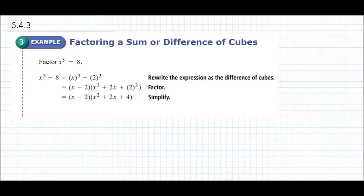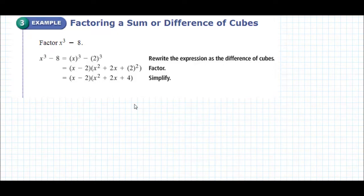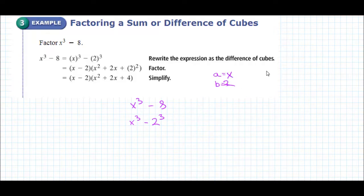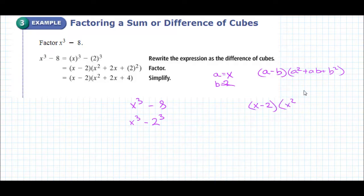Let's look at the first example: factor x³ - 8. We can rewrite this as x³ - 2³. So a = x and b = 2. Using the difference of cubes formula, a - b times a² + ab + b², we plug in: (x - 2)(x² + 2x + 4). This is just memorization of the difference of cubes formula.